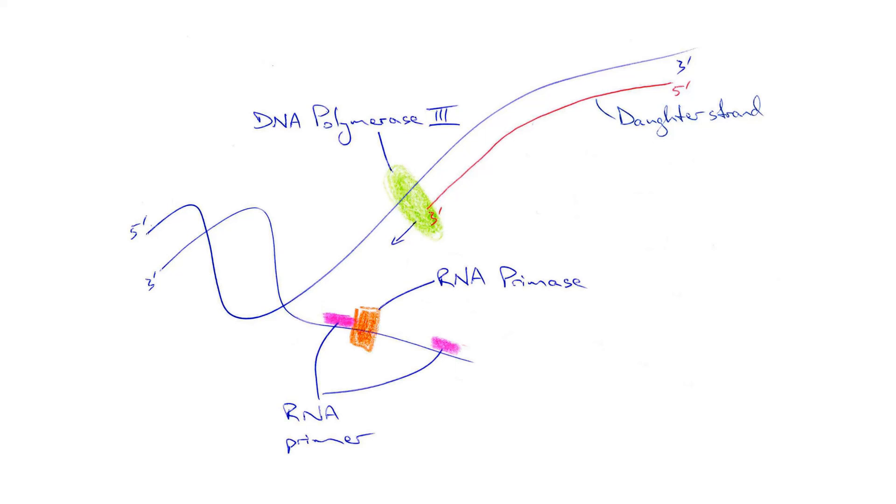Because DNA polymerase 3 only works in the five prime to three prime direction, it can only add nucleotides in a continuous fashion to one of the parent strands. The newly formed daughter strand is called the leading strand and the replication is called continuous replication.